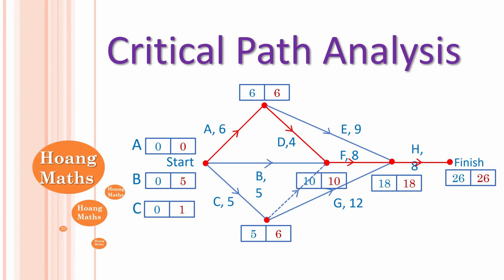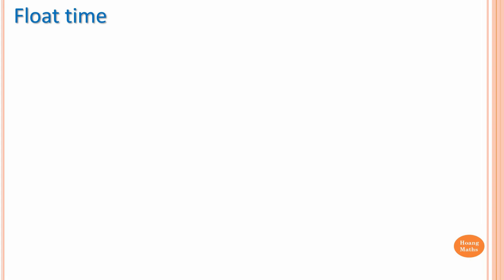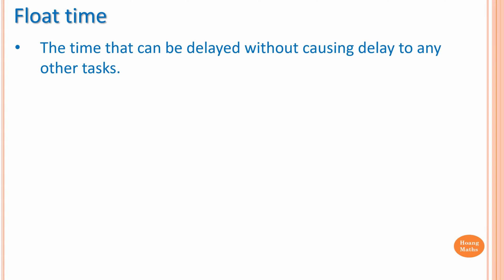If you can, please download or print out the PDF file in the description below so you can work with me. Before finding a critical path of a network, we need to go through a couple of terms first. Float time is the time that an activity can be delayed without causing any delay to other activities.